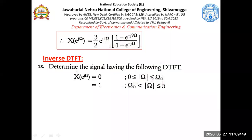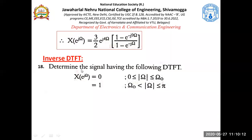Now let's move on to the inverse DTFT. This problem was taken to illustrate the finite summation case. In inverse DTFT, the DTFT — that is, the frequency domain signal — is given, and we need to obtain the time domain signal x(n).